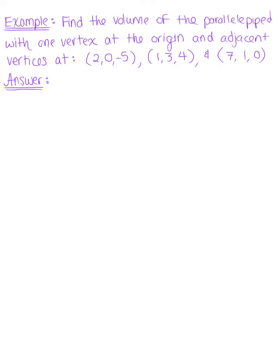Find the volume of the parallelepiped, or box, with one vertex at the origin and adjacent vertices at the given ordered triplets.